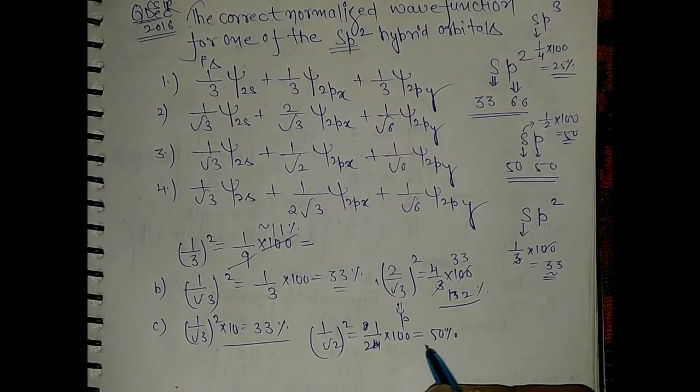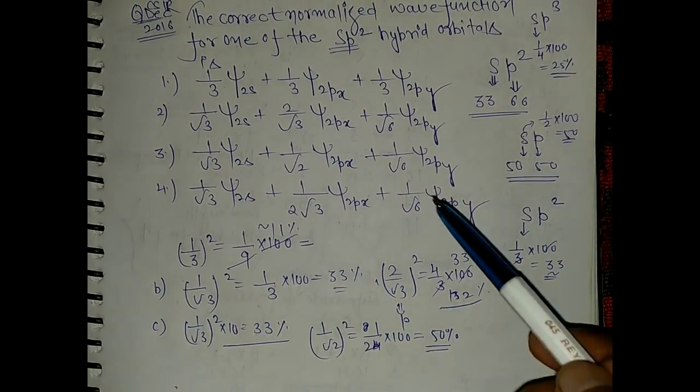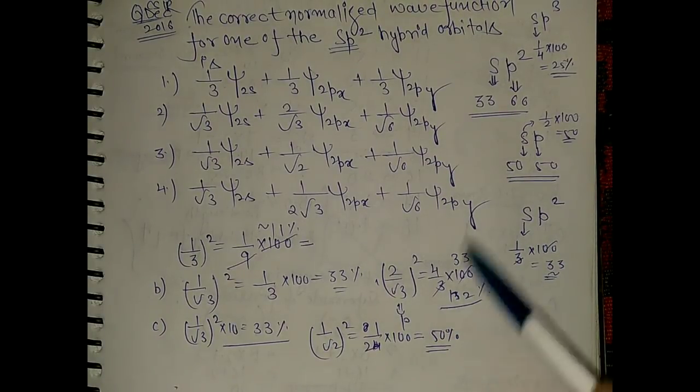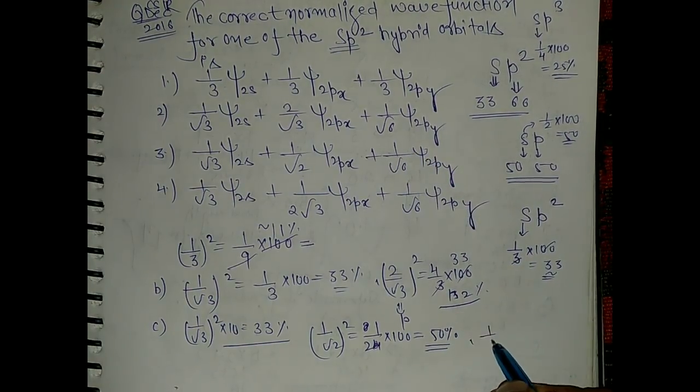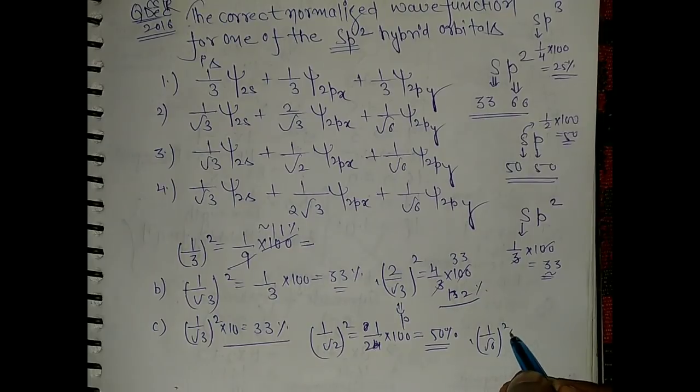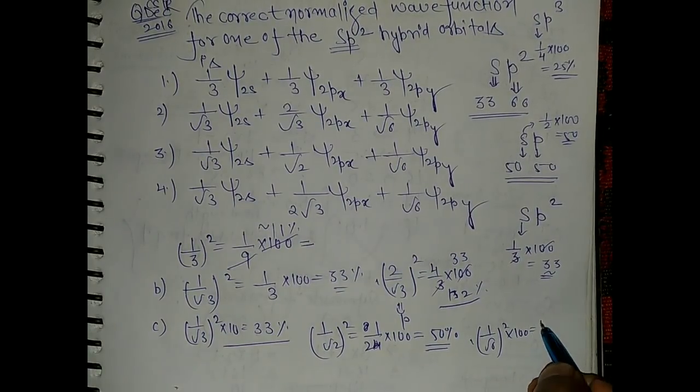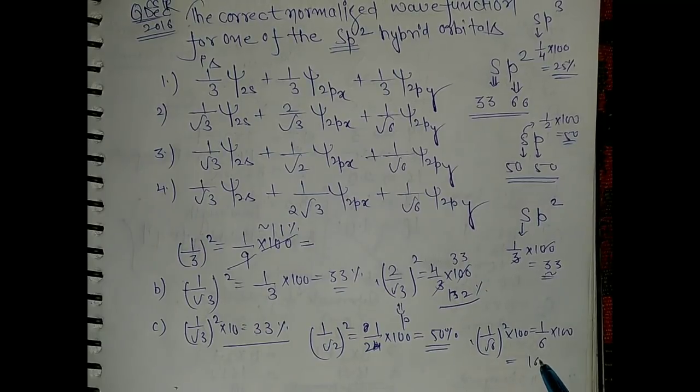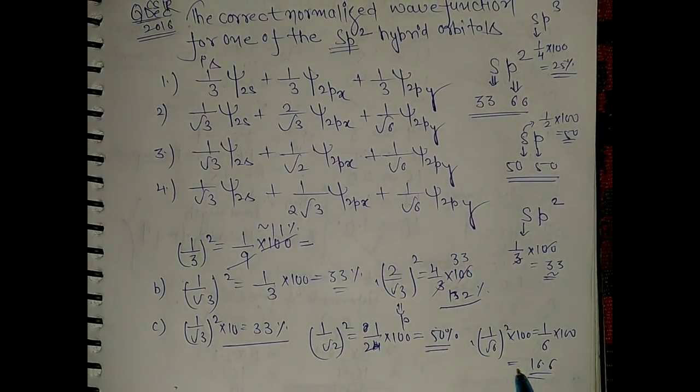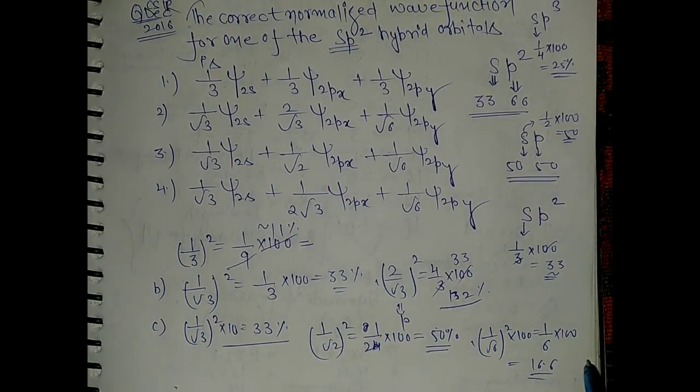That means for the p orbitals to be 66%, this should be around 16%. So just take 1 by root 6 square into 100, so it is around 1 by 6 into 100 and it will come around 16.6%, so we have 50 plus 16.6 around 66% for p orbitals.